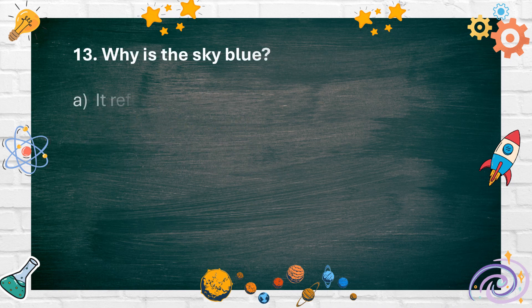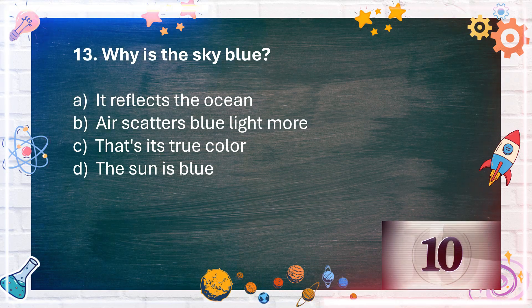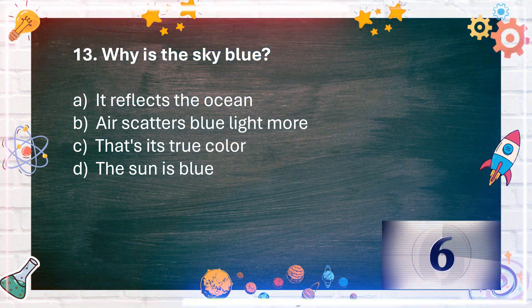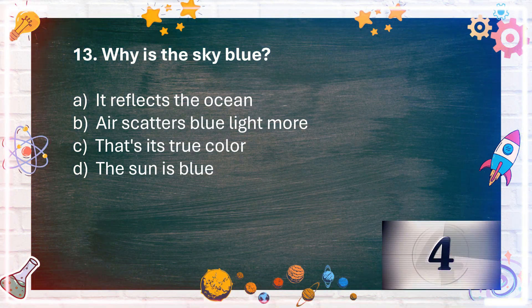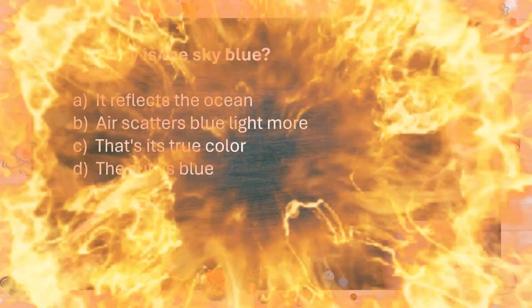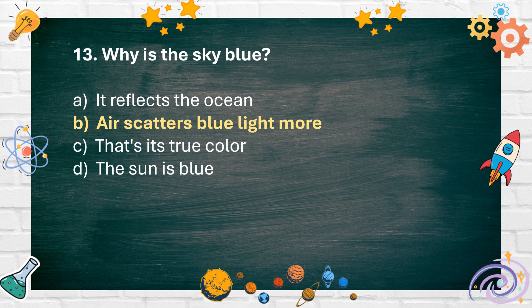Number 13: Why is the sky blue? A. It reflects the ocean. B. Air scatters blue light more. C. That's its true color. D. The sun is blue. The answer is B. Air scatters blue light more.